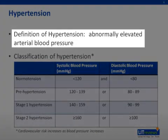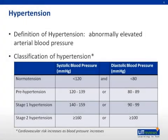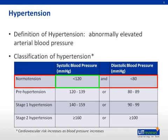Hypertension exists when blood pressure within the arterial walls is abnormally elevated. Blood pressure has been classified into the following categories. Normal tension: a systolic blood pressure less than 120 and a diastolic blood pressure less than 80.